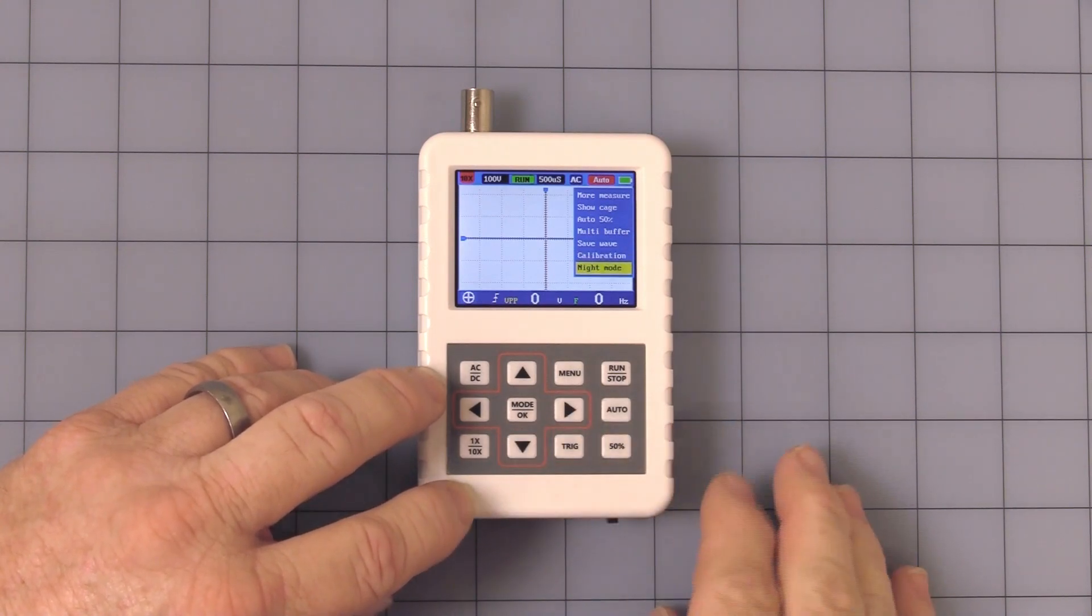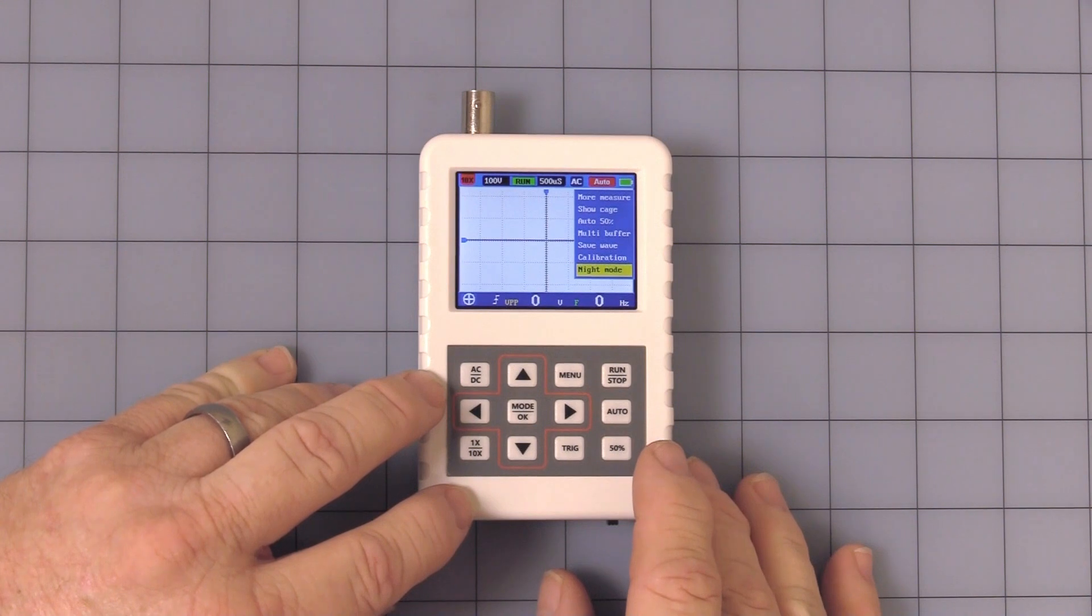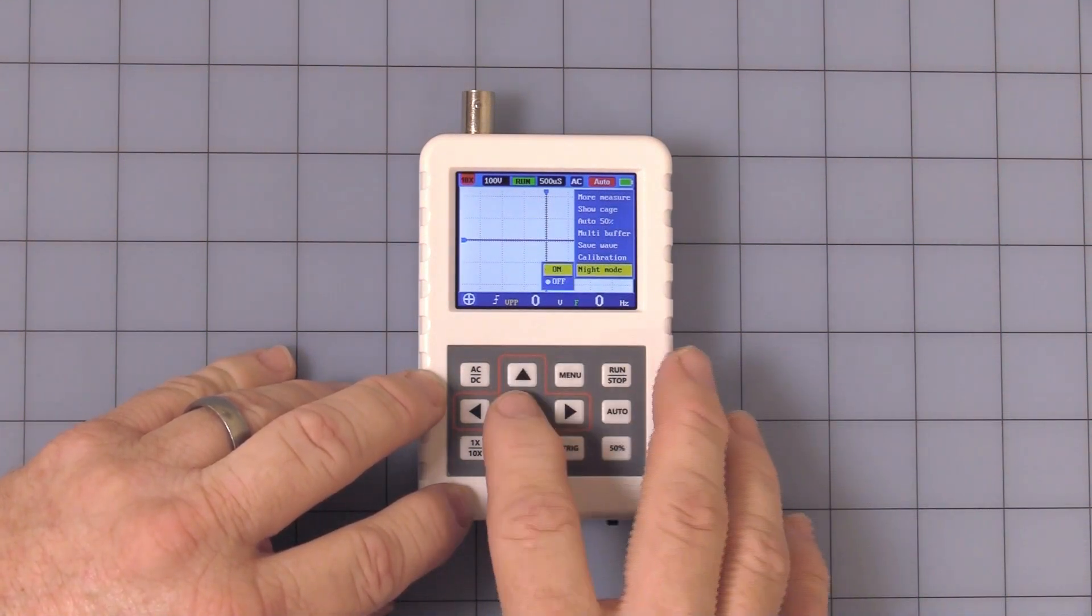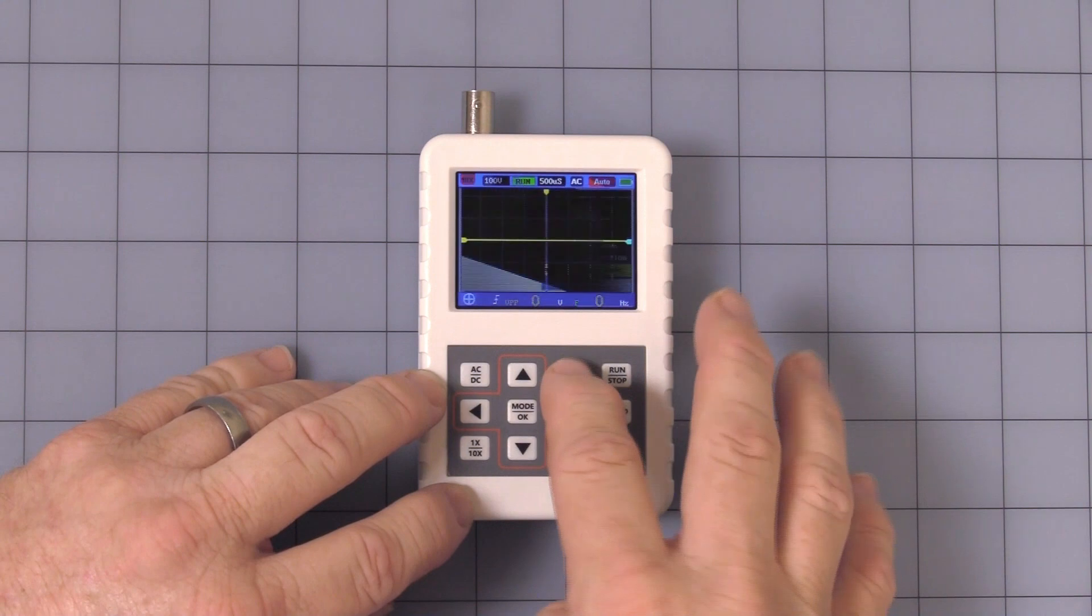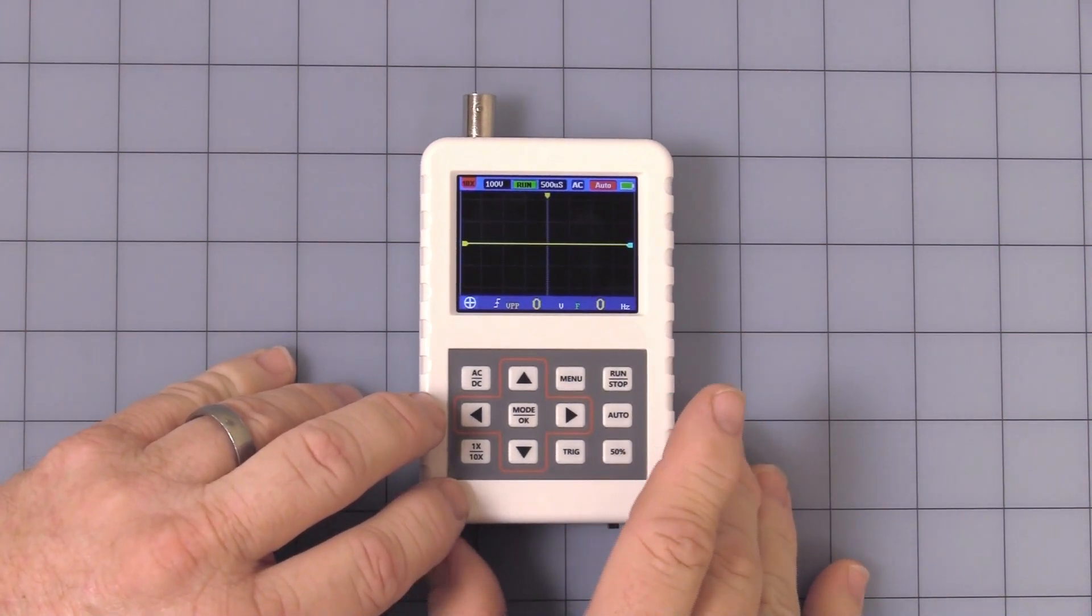Then last but not least, you have the night mode. This has a nice daytime white background for viewing. You want to turn that off. There, now you have a dark background.